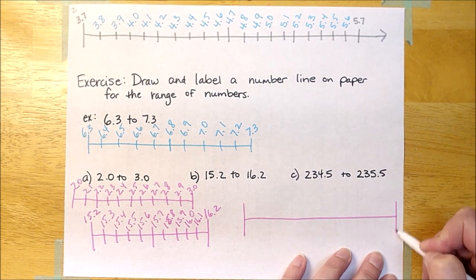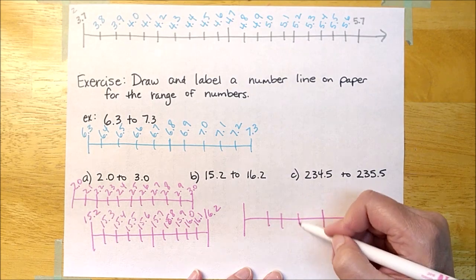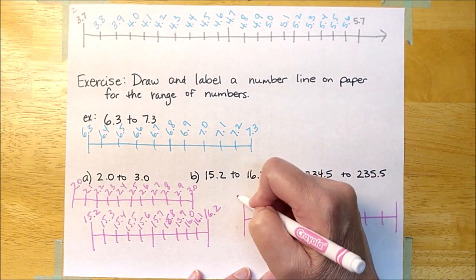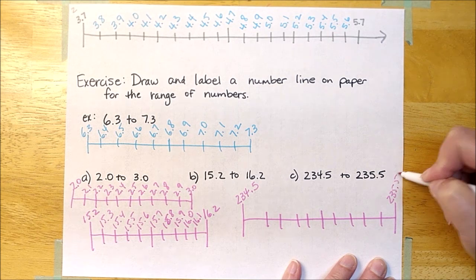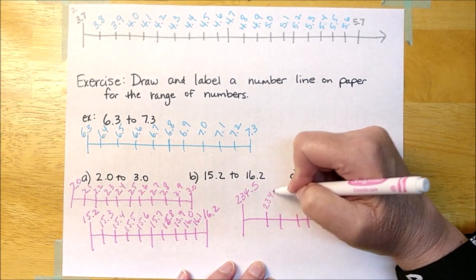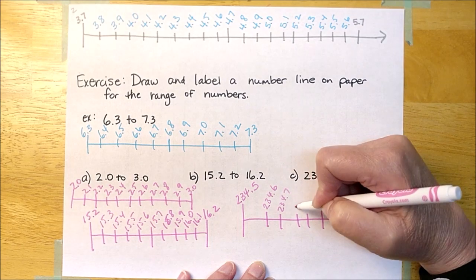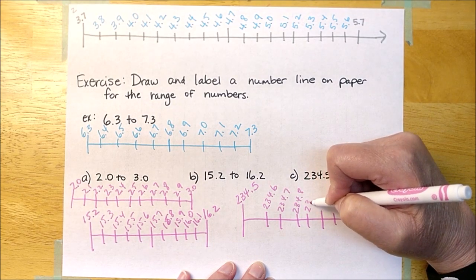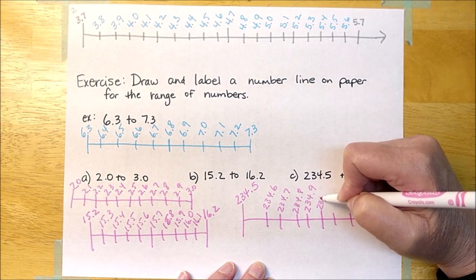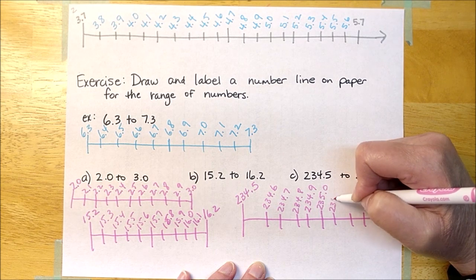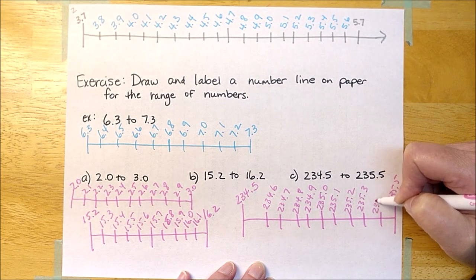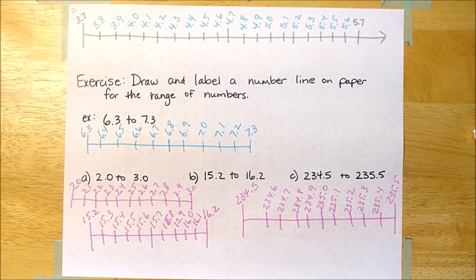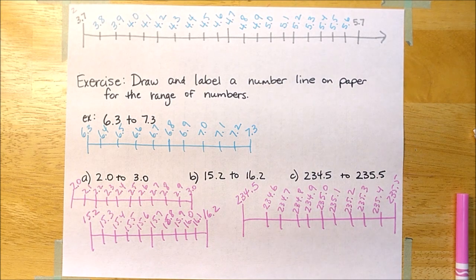I'm going to make this a little longer because my numbers are getting bigger. One, two, three, four on each side. This would be two hundred thirty-four and five tenths over here, and two hundred thirty-five and five tenths on the other end. So: two thirty-four and six tenths, two thirty-four and seven tenths, two thirty-four and eight tenths, two thirty-four and nine tenths, two thirty-five and no tenths, two thirty-five and one tenth, two thirty-five and two tenths, two thirty-five and three tenths, two thirty-five and four tenths, two thirty-five and five tenths. We are going to stop here and come back in part two.